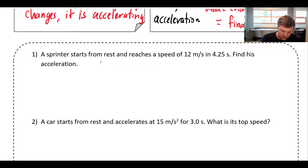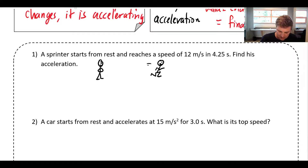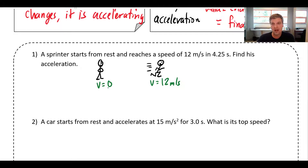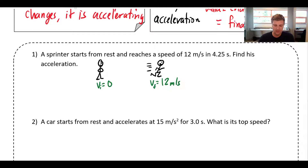So here's our sprinter just standing around, hands on hips, getting excited — starting from rest, then taking off and running. They start from rest and reach a speed of 12 meters per second in 4.25 seconds. At the start the velocity is zero, and by the end the velocity is 12 meters per second. We can differentiate these as initial and final velocity — let's call them v-initial and v-final for now.